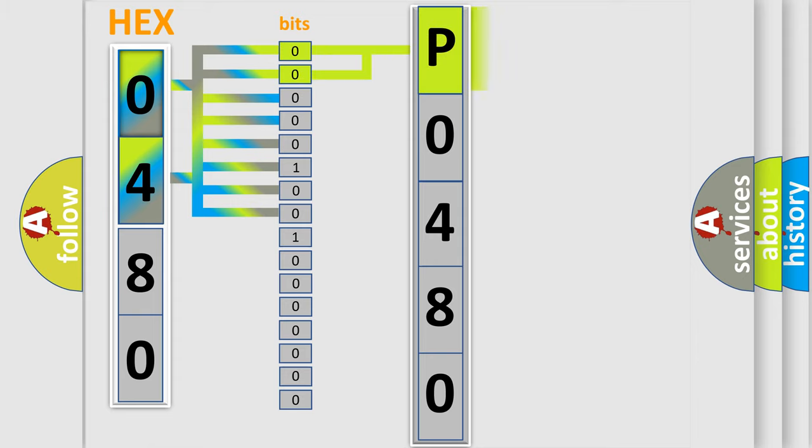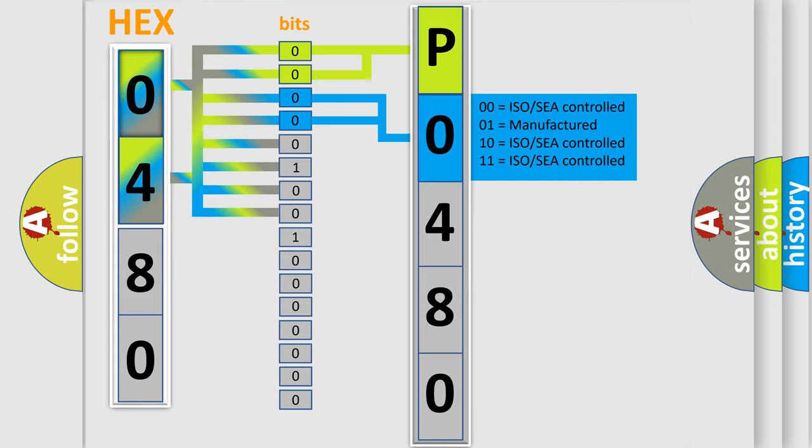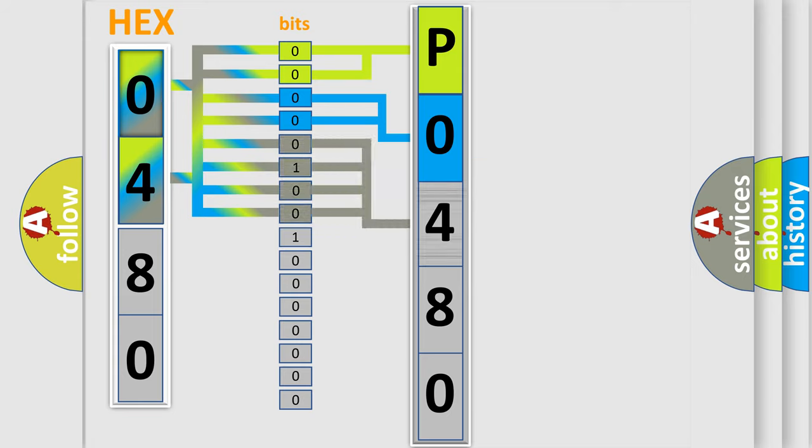By combining the first two bits, the basic character of the error code is expressed. The next two bits determine the second character. The last bit styles of the first byte define the third character of the code.